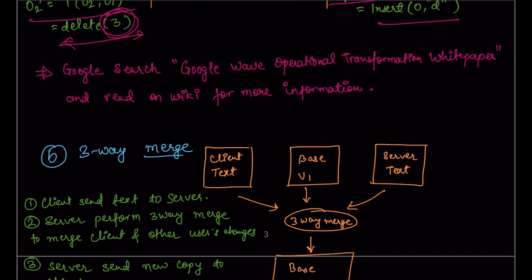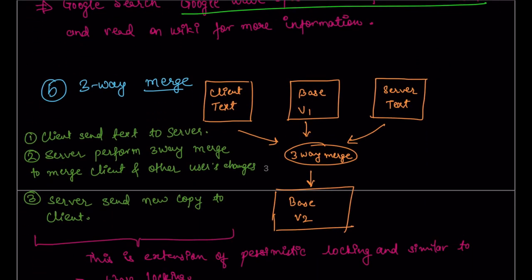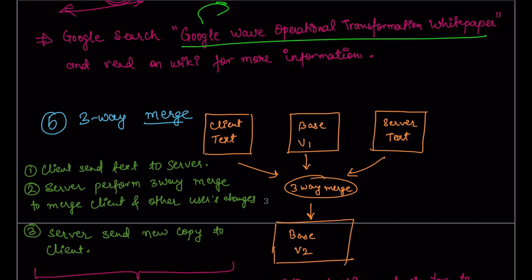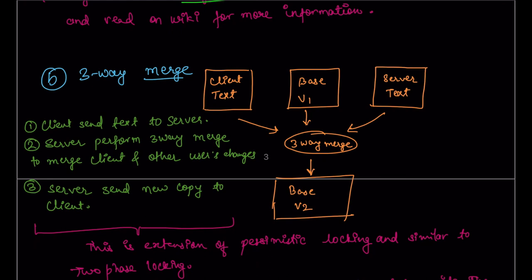The operational transformation algorithm resolves the document to a consistent state for all users. Without going into full implementation detail, the key idea is that it figures out the updated character location where each operation should actually be performed. If you want more detail, search for the Google Wave operational transformation white paper — it's an authentic source. I'll also link it in the video description. You can also read about it on Wikipedia.